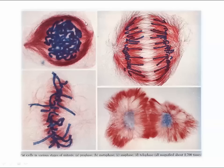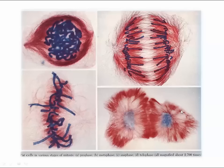Scientists have given each of these arrangements different names — we call them phases — just to help us identify how soon the cell division process is going to be over or if we think it's about to begin. I can tell from looking at these that this is prophase, this is anaphase, this is metaphase, and this is telophase.